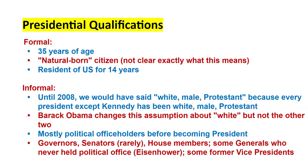To be president, the Constitution requires you to be 35 years of age, a resident of the United States for 14 years (which can include serving in an embassy or military stationed abroad, or on U.S. territories), and a natural-born citizen. Natural-born citizen is generally assumed to mean born in the United States, its territories, or a U.S. consulate or embassy — but that's never really been tested in court.